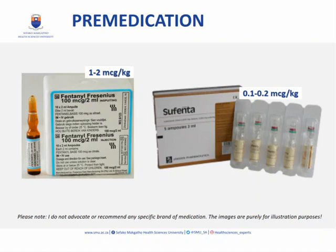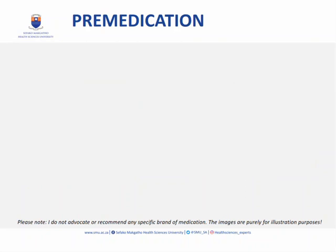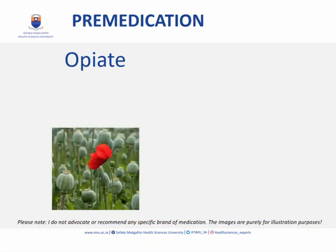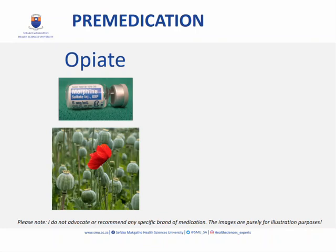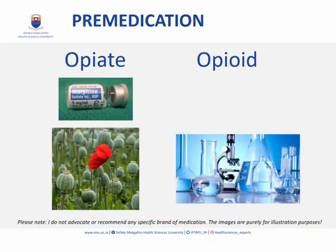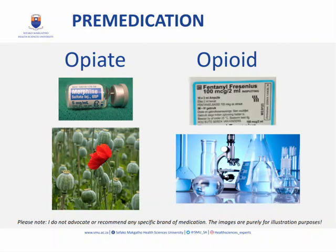We can also give medication to blunt the intubation response — in other words, to prevent hypertension and tachycardia in response to intubation or airway management. Usually we will use a synthetic opioid like fentanyl or sufentanil. The term opiate refers to drugs that are natural derivatives of opium or the poppy plant, such as codeine and morphine. The term opioid, on the other hand, refers to synthetic or semi-synthetic compounds created in a laboratory that bind to the same opioid receptors. We use synthetic opioids because they have a faster onset of action within a few minutes and a shorter duration of action of about 30 minutes, compared to morphine.